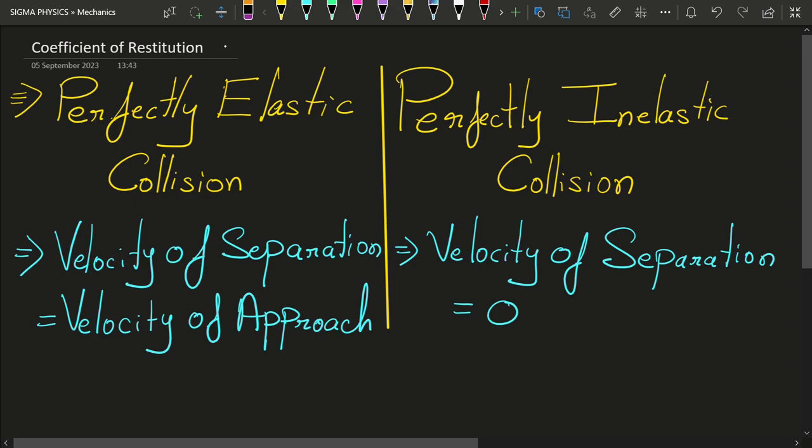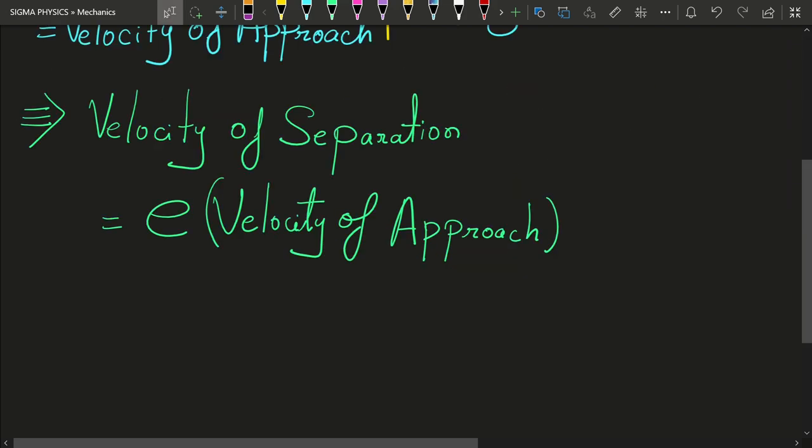In the general case, we can say that the velocity of separation is proportional to the velocity of approach. If you remove the proportionality symbol, you get a proportionality constant which I'm going to call e, where this constant of proportionality e is known as the coefficient of restitution.